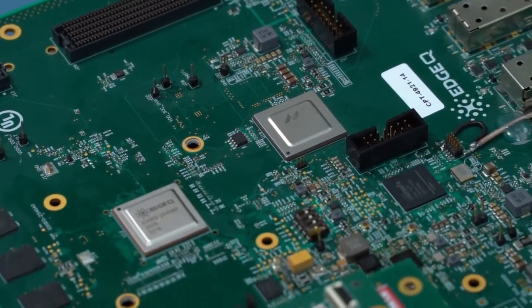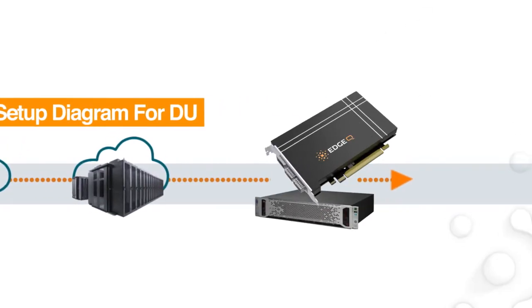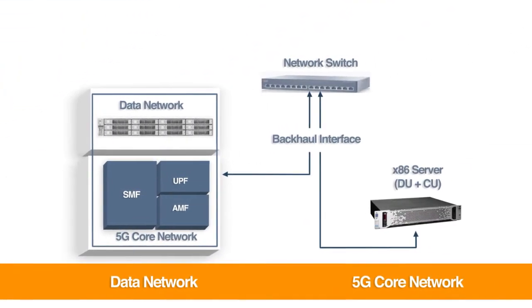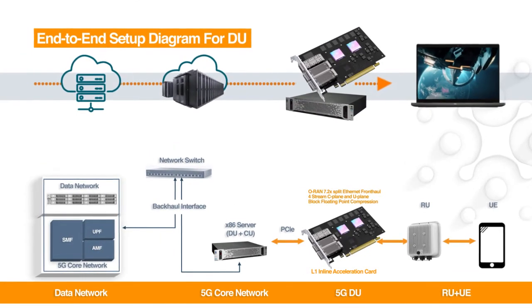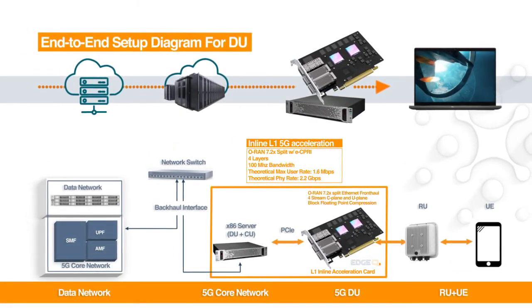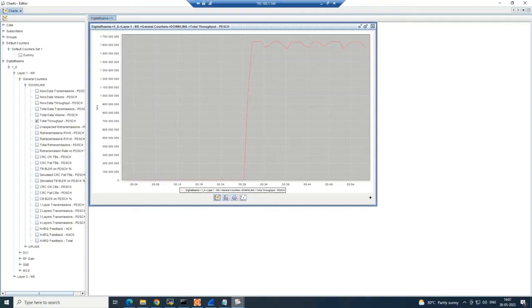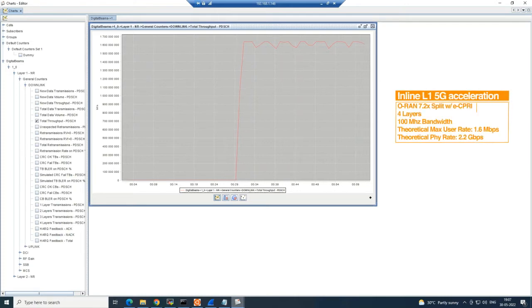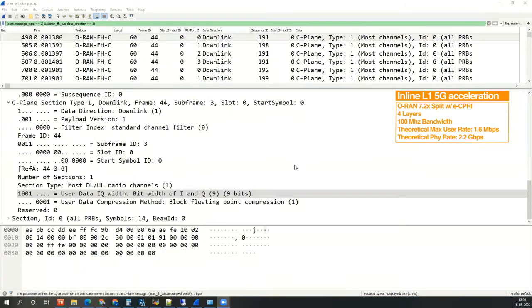Now take the same chip and let us reprogram it to a DU macro base station application. We keep the same construct but replace the UE module with a RU emulator. In this second demo, our HQ SoC acting as a layer 1 accelerator is paired with an x86 server to represent a full DU base station solution running 4G and 5G physical layer and layer 2 software. You will see inline acceleration of L1 running at 2.2 gigabits per second, set up for a single carrier 4 layers running over an eCPRI interface of an option split 7.2. The same chip powering a 4x4 small cell is now also powering a DU base station processing up to 64 antenna massive MIMO configuration — one design, one core IP, all software defined.